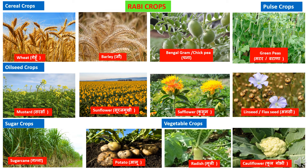Under cereals, wheat and barley are major Rabi crops. Under pulse crops, Bengal gram and green peas are cultivated. Under oilseeds, mustard, rapeseed, sunflower, safflower, and linseed or flaxseed play an important role. Under sugar crops, sugarcane is cultivated in northern, central, and western states. Under vegetable crops, potato, radish, and cauliflower are majorly grown in the Rabi season.